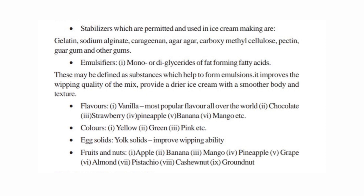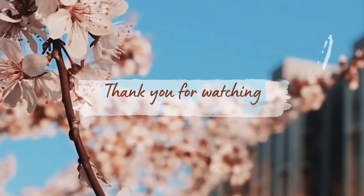Emulsifiers are called mono or diglycerides of fat-forming fatty acids. Emulsifiers may be defined as substances which help to form emulsions, and they provide a drier ice cream with a smoother body and texture. Flavors used include vanilla, chocolate, pineapple, banana, mango. Colors used include yellow, green, pink. Other ingredients include egg solids, yolk solids, and fruits and nuts such as banana, apple, grape, pineapple, and other fruits. Next is blending of mixer.